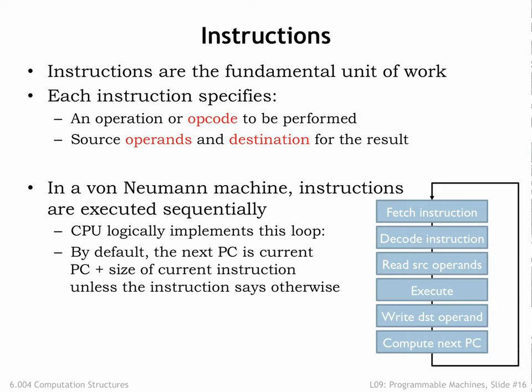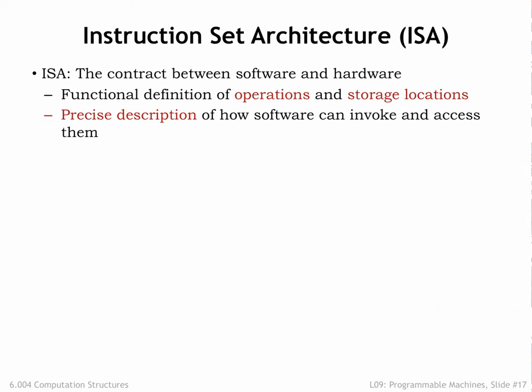This execution loop is performed again and again. Modern machines can execute more than a billion instructions per second. The discussion so far has been a bit abstract. Now it's time to roll up our sleeves and figure out what instructions we want our system to support. The specification of instruction fields and their meaning along with the details of the datapath design are collectively called the instruction set architecture of the system.